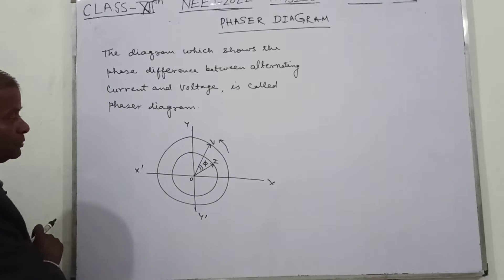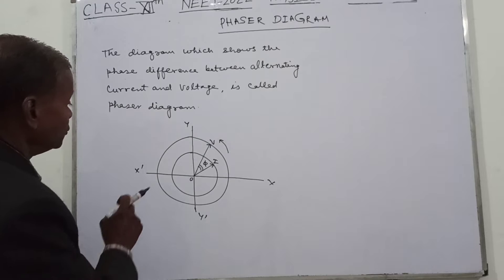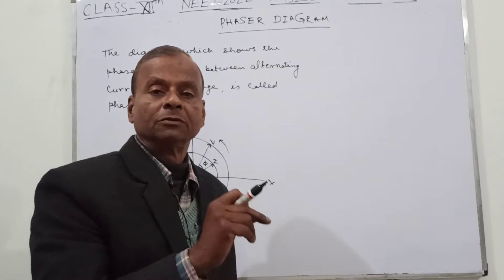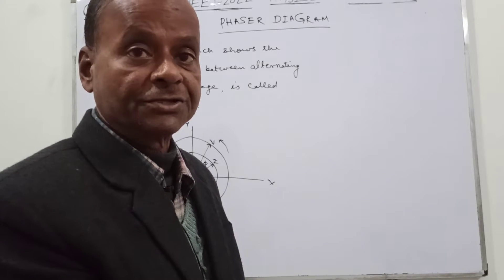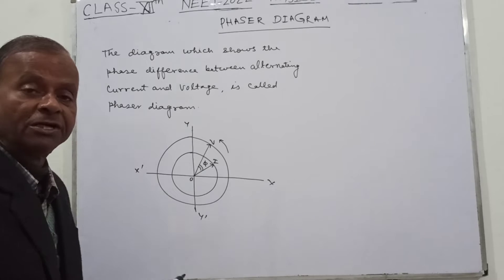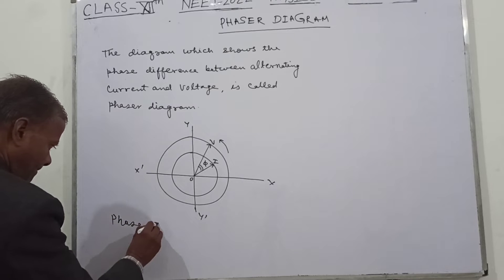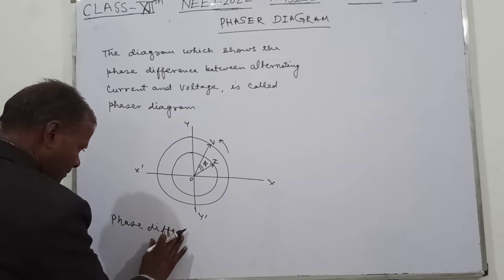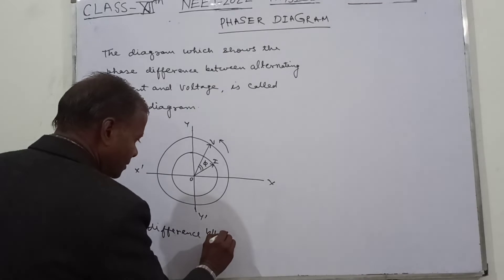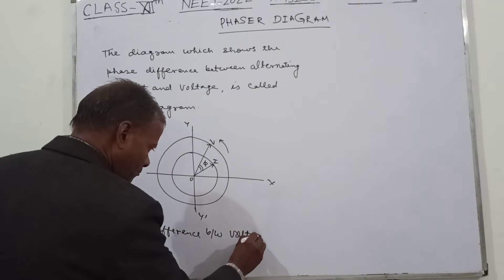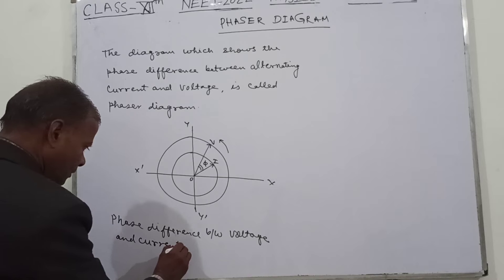So this I and V both — the phase difference φ will depend upon the element used in the circuit. So φ may be zero, positive, or negative. Both values are possible here. And this is always taken with respect to the voltage. So we have the phase difference between the voltage and the current equal to phi (φ).